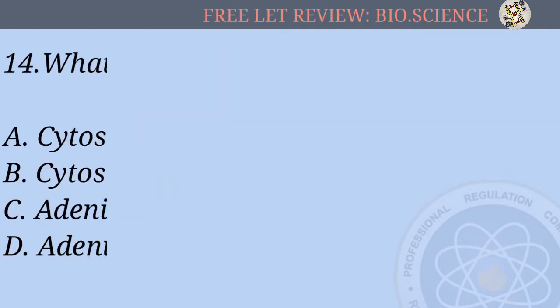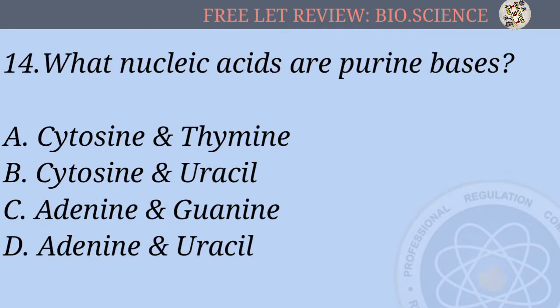Number 14: What nucleic acids are purine bases? A) cytosine and thymine, B) cytosine and uracil, C) adenine and guanine, D) adenine and uracil.